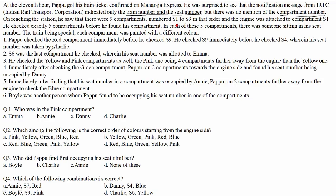The compartments were arranged from S1 to S9, with the engine attached to compartment S1. He checked exactly 5 compartments before he found his compartment. In each of these 5 compartments, there was someone sitting in his seat number. The train being special, each compartment was painted with a different color.